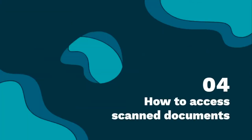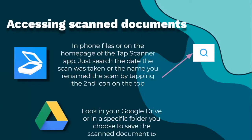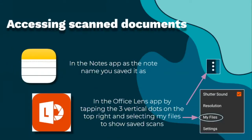How to access scanned documents. In the Tap Scanner app, search by the date the scan was taken or by the name you gave it by tapping the second icon on the top. For Google Drive, look in your Google Drive or in a specific folder you chose to save the document to. In Notes, the note is named as you saved it. In the Office Lens app, tap the three vertical dots on the top right and select Files to show saved scans.